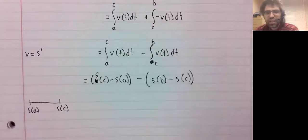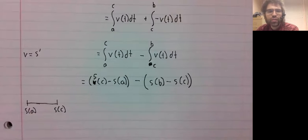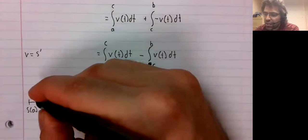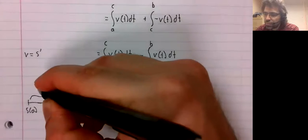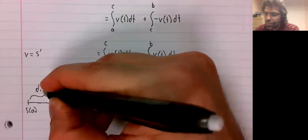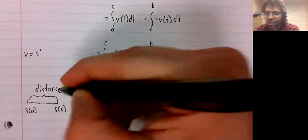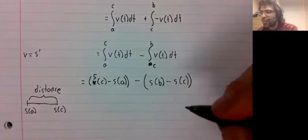So we've got S of A, we move to the right, we get to S of C. So S of C minus S of A is simply the distance traveled.